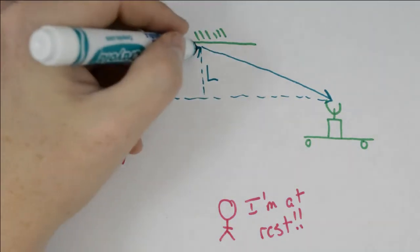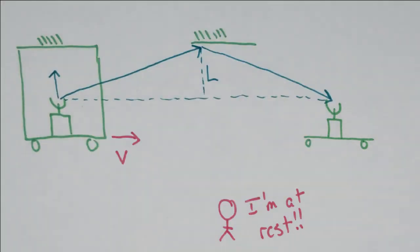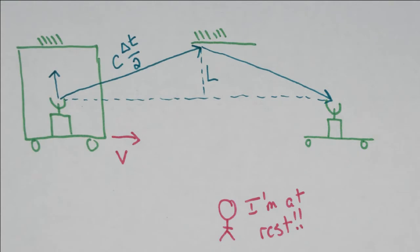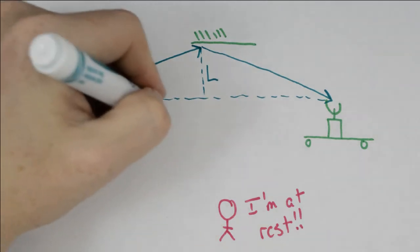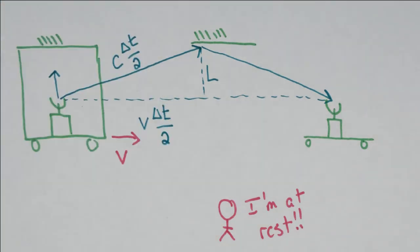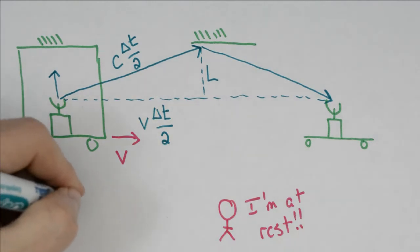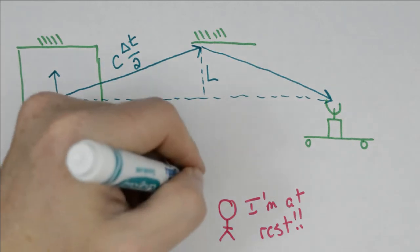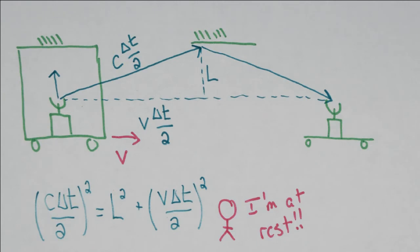The distance between the mirror and the emitter is still going to be L. And because light is traveling at the speed of light, we're going to see that this leg of the triangle is C delta T over 2 and we have V delta T over 2. At this point with the right angle triangle, we're left with Pythagorean theorem. So we're going to have C delta T over 2 squared is equal to L squared plus V delta T over 2 all squared.